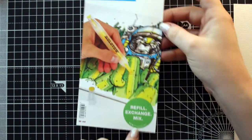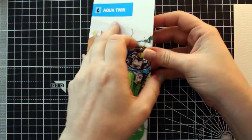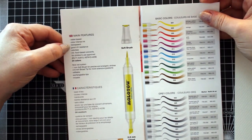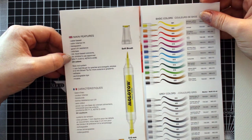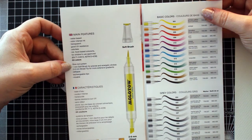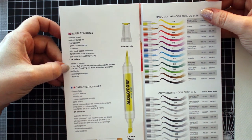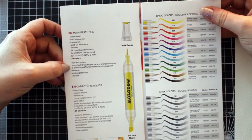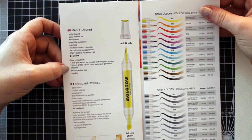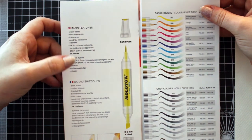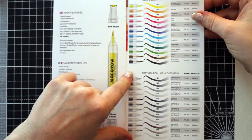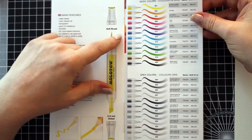So the Molotow Aqua Twin refill exchange mix. That sounds good. Okay, so main features. They're water-based, color intense ink, transparent, good UV resistance, odorless. They've got food-based colorants and they are approved for children. There's only 24 colors in the set. Fiber rod system, one millimeter soft brush for precise and energetic strokes. Two to six millimeter broad tip for more extensive gradients. They are refillable, they've got exchangeable tips and they are mixable. So I'm assuming that these are all the colours. So that's quite a large range of greys for only 24 in the set. So nice.